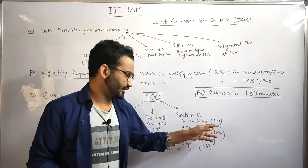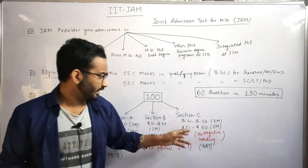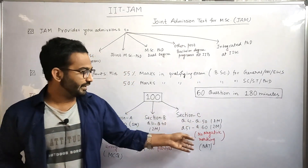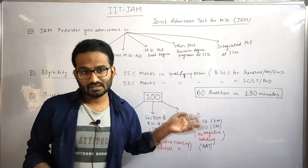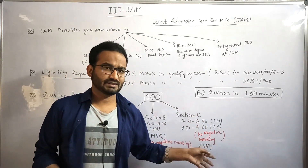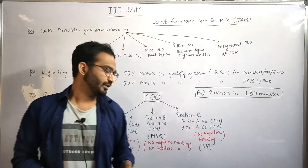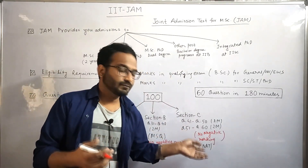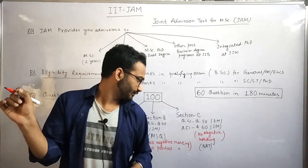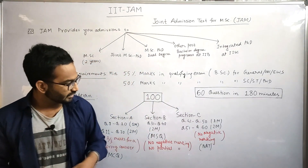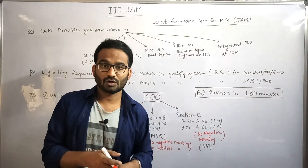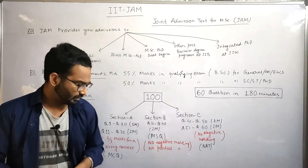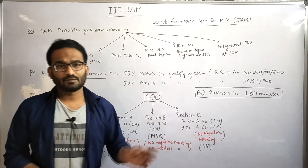In Section C, question numbers 41 to 50 are of one mark each and question numbers 51 to 60 are of two marks each. There is no negative marking in this section either. The nature of Section C questions is Numerical Answer Type — you are required to write the answer numerically, and they will give instructions on how many decimal places to retain.